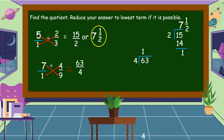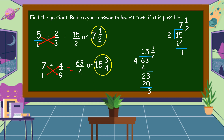Six divided by four is equal to one. One times four is equal to four. Six minus four is equal to two. Bring down three. So, twenty-three divided by four is equal to five. Five times four is equal to twenty. Twenty-three minus twenty is equal to three. Tapos, itong remainder three, gagawin nating numerator. Ang four na divisor ay gagawin nating denominator. So, sixty-three fourths or fifteen and three-fourths. Ito yung ating pinakasagot.